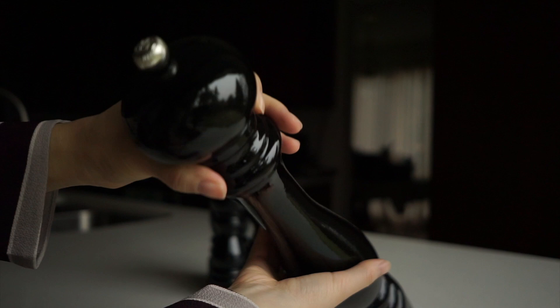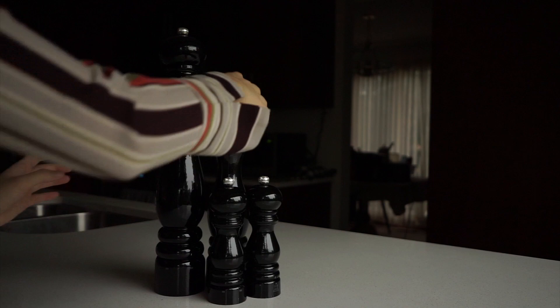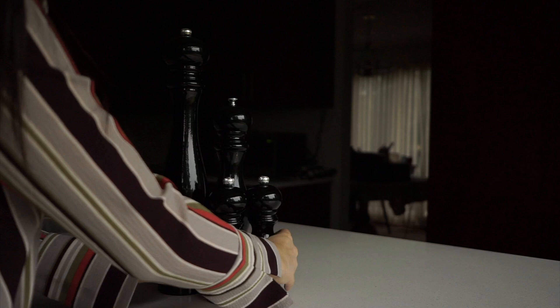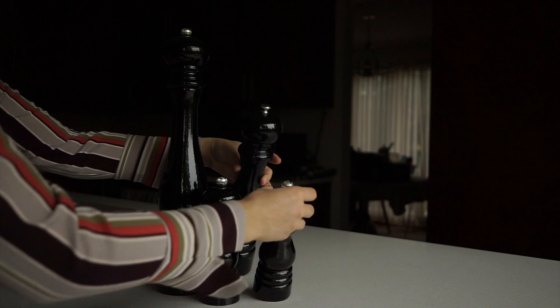If a rustic finish isn't your thing though, try going a little bit more modern with Peugeot Paris, this glossy black collection. These are the Paris Uselect mills which are a cornerstone of the line and are available in a ton of different specifications. 18 centimeters, 30 and 40 are featured here.